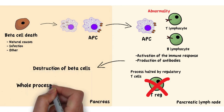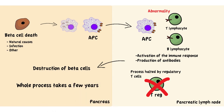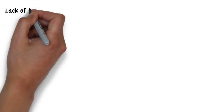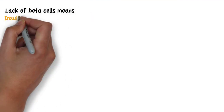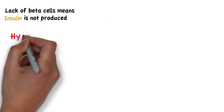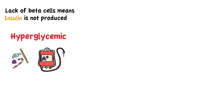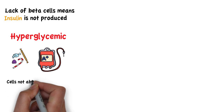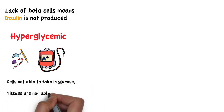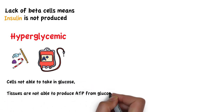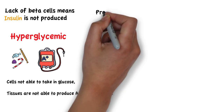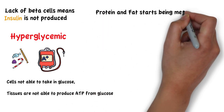This process takes a few years, and that's why type 1 diabetes is usually only diagnosed in childhood. The lack of beta cells means insulin is not being produced, and therefore the patients become hyperglycemic. Since the body cells are not able to take in glucose, tissues are not able to produce ATP from glucose, and therefore protein and fat start being metabolized.